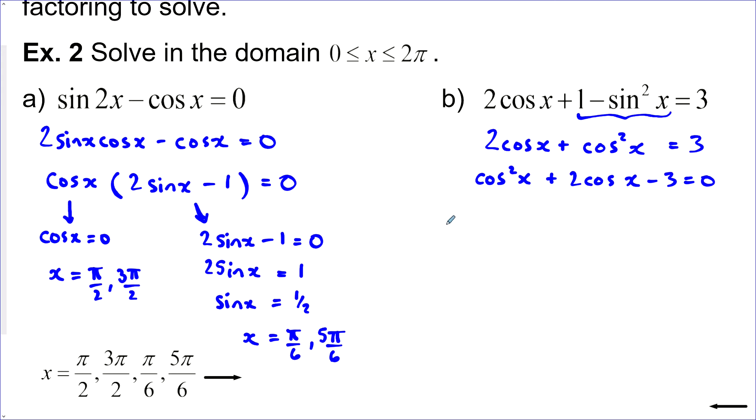I could, and I'll write optional here, I could sub this trig function out. So let a equal cos. That will make it a bit easier because once I do that, I just have a squared plus 2a minus 3 equals 0.